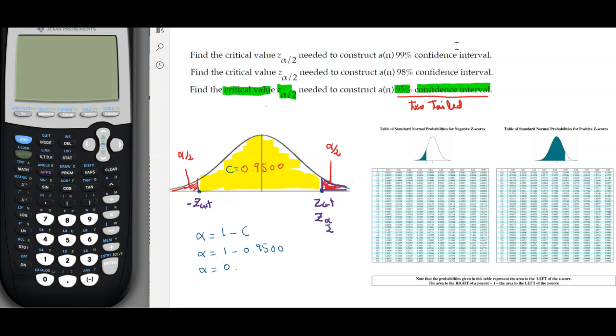Once we determine the alpha it's easy to determine alpha over 2, which would be 0.025. So in the end we are looking for the value of the 0.025.